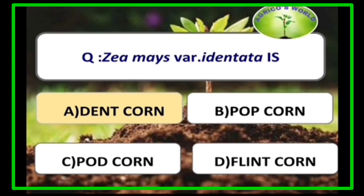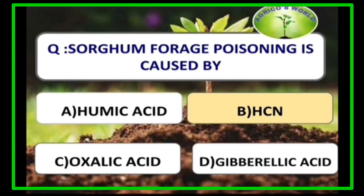Zea mays variety Indentata is Dent corn, variety Everta is Popcorn, and variety Tunicata is also Popcorn. Sorghum forage poisoning is caused by hydrogen cyanide.